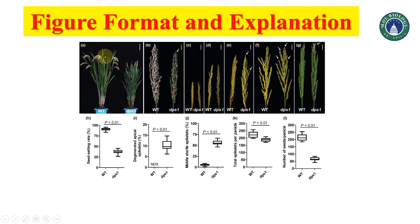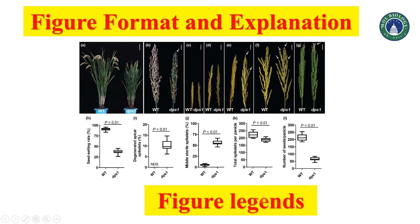One overall figure is composed of several panels. Another important thing is the explanation of these figure panels, which is called figure legends. You have to individually describe what is shown in A, B, C, and so on. For example, in panel A you can say on the left side is wild type and on the right side is the mutant named dps1. In panel B you can explain wild type and mutant type pentacle, including different lengths, and you must give individual details for panels A through I.